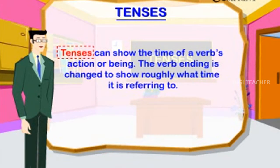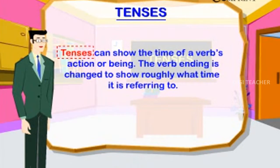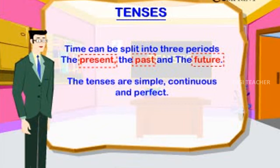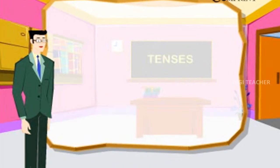Tenses can show the time of a verb's action or being. The verb ending is changed to show roughly what time it refers to. Time can be split into three periods: the present, the past, and the future. The tenses are simple, continuous, and perfect.